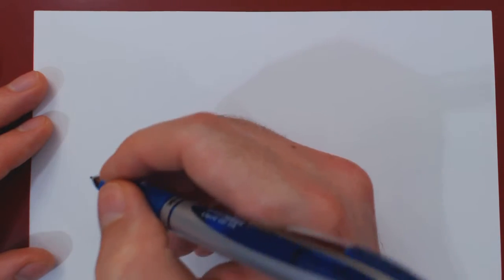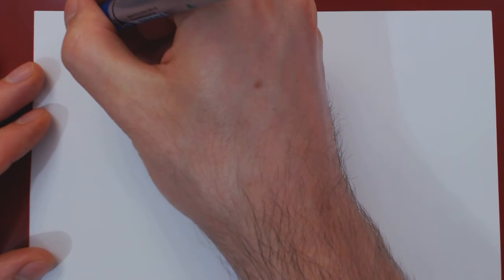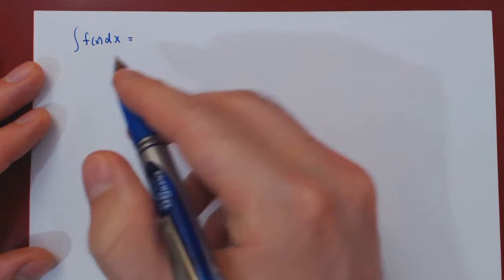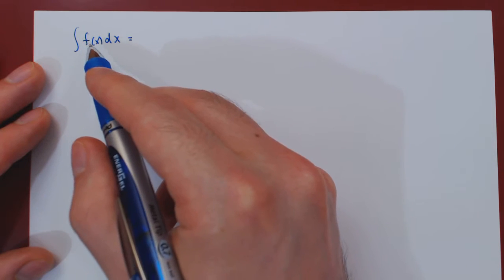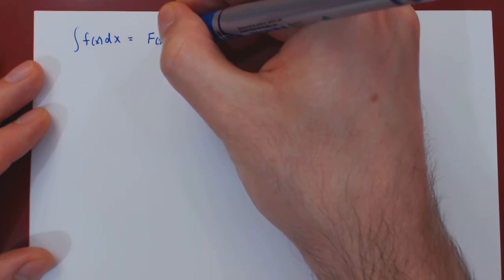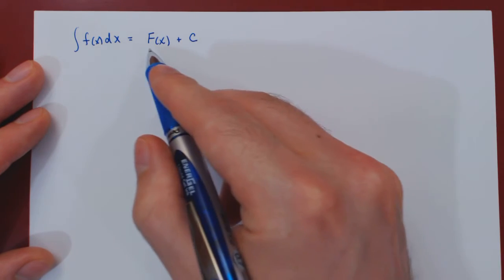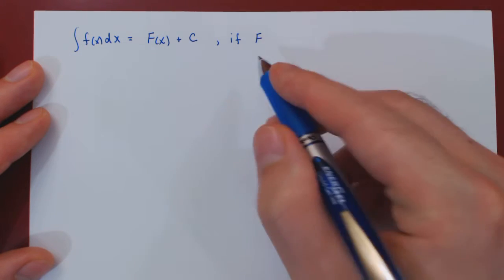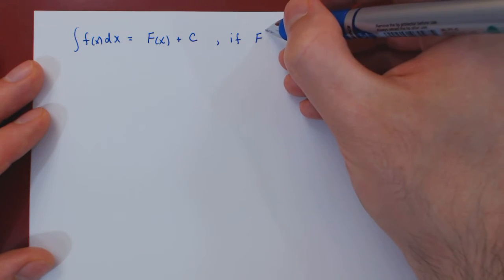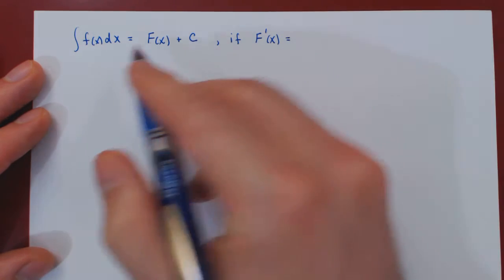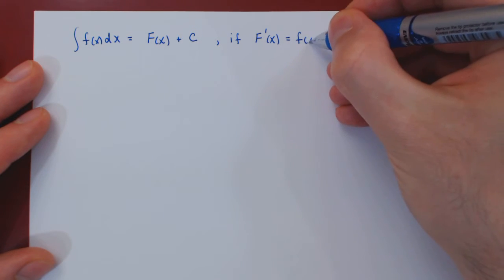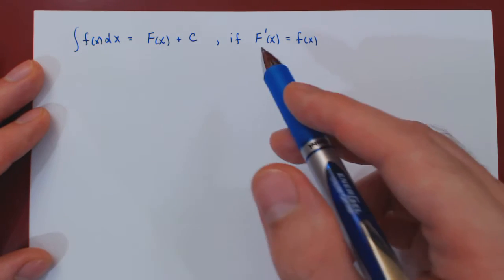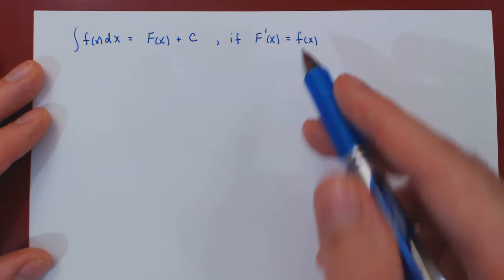Recall that there are two types of integrals. The first type is the indefinite integral. This means finding all antiderivatives of lowercase f, so this will be uppercase F of x plus C, as antiderivatives are unique up to a constant. If uppercase F is an antiderivative of lowercase f, this means the derivative of uppercase F is simply lowercase f. The key word here is antiderivative.